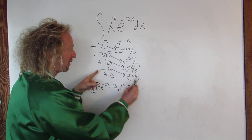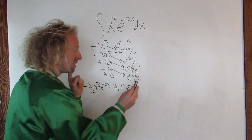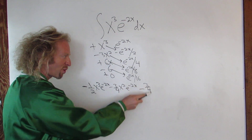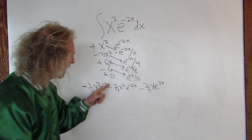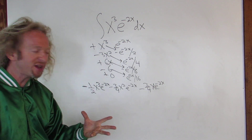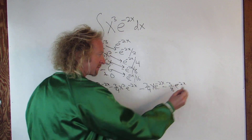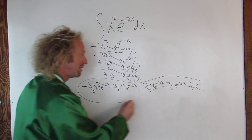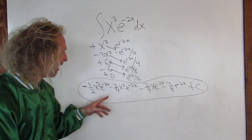Look at this — it's negative again. But 6 over 8 simplifies to 3 fourths, so we have negative 3 fourths times x times e to the negative 2x. Then again it's negative: 6 over 16 is 3 over 8, so negative 3 over 8 times e to the negative 2x, plus C. Don't forget the plus C — you always have to write plus C in indefinite integrals.